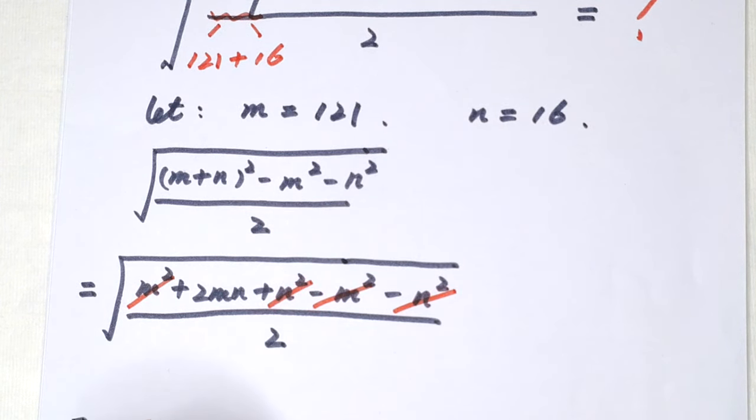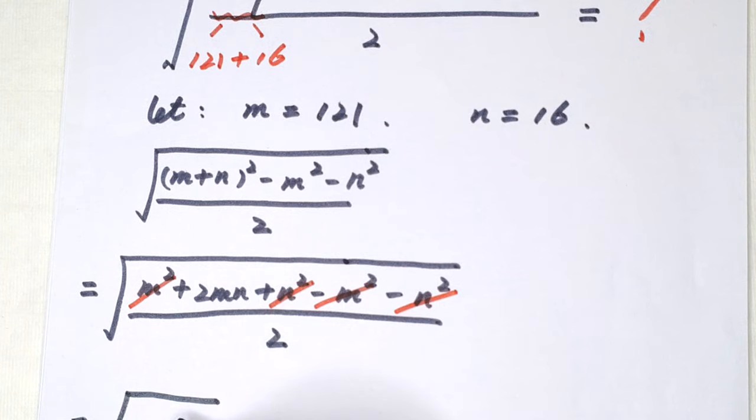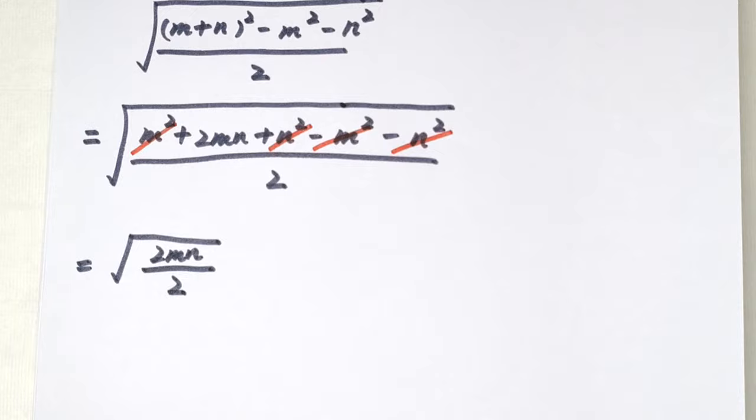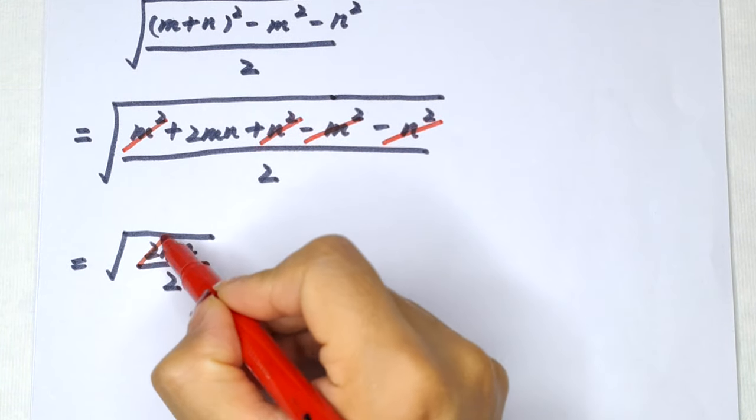So it will be equal to square root of 2mn over 2, then this will cancel.